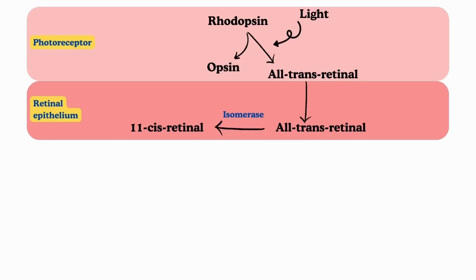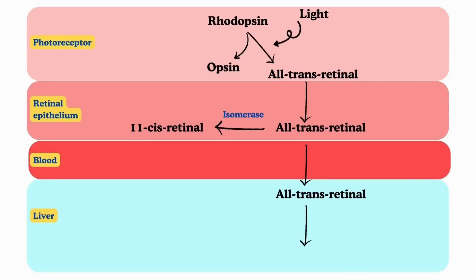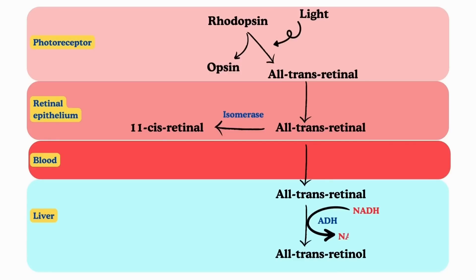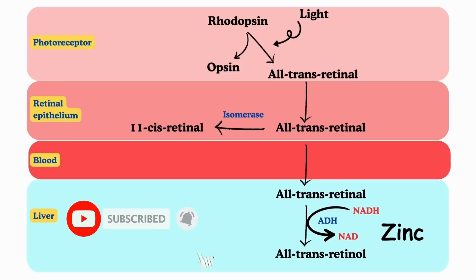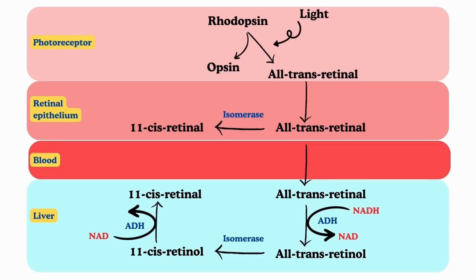Alternatively, most of the all-trans retinal is transported to the liver through blood. In the liver, all-trans retinal is reduced to all-trans retinol by the enzyme alcohol dehydrogenase, which is NADH-dependent. Alcohol dehydrogenase contains zinc also, so zinc is essential for retinol metabolism. All-trans retinol is then isomerized to 11-cis retinol by isomerase, and 11-cis retinol is oxidized to 11-cis retinal by alcohol dehydrogenase using NAD.